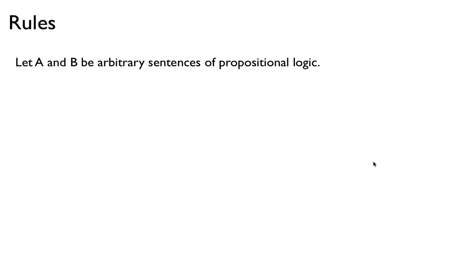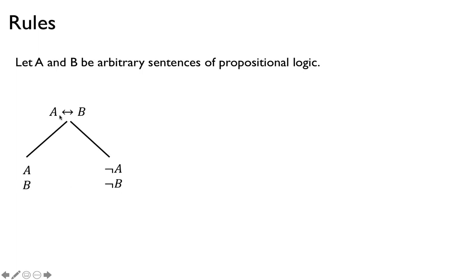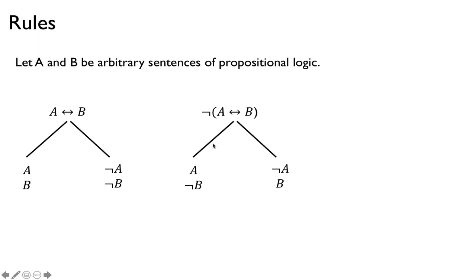Here are the last three rules. The biconditional: a if and only if b means they're both the same — either both true or both false. So we branch into 'a, b' (both true) or 'not-a, not-b' (both false). For not (a iff b): if it's not true that they're equivalent, that means either a and not-b, or not-a and b. Finally, the double negation rule says that not-not-a is simply a. Those are the nine rules we need to memorize to break down connectives into smaller components.